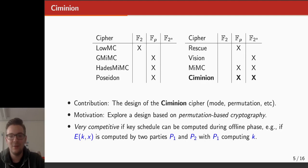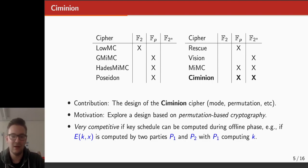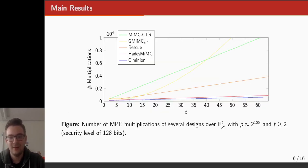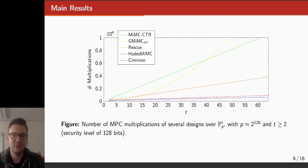It turns out that C-Minion is quite competitive if the key schedule, which is quite heavy, can be computed during an offline phase — for example, in a two-party computation setting where one party has the key and the other has the input. In the following figure, you see a number of ciphers including C-Minion and the number of multiplications they require. On the x-axis is the variable t, corresponding to the number of elements to be encrypted, and on the y-axis is the number of multiplications. C-Minion, shown in blue, performs quite well, and our closest competitor in terms of minimizing multiplications turns out to be Hades-Mimsi.